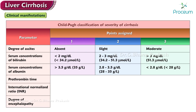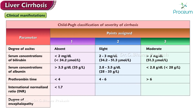For the prothrombin time parameter, measured in seconds over control: one point if less than 4; two points if 4 to 6; and three points if more than 6. For the international normalized ratio: one point if less than 1.7; two points if 1.7 to 2.3; and three points if more than 2.3.